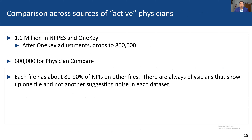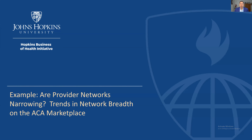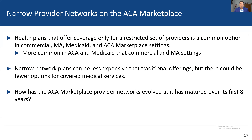As a summary: we have 1.1 million physicians in both NPPES and OneKey, dropping to around 800,000 with our adjustments in OneKey; Physician Compare has about 600,000 active physicians. When you compare the NPIs across these files there's always about an 80–90% overlap — you're never going to get exactly the same physicians. I would suggest there's always some error in each of these data sets.